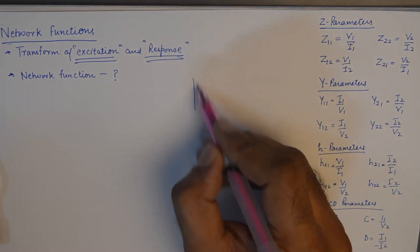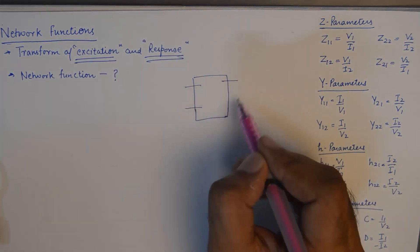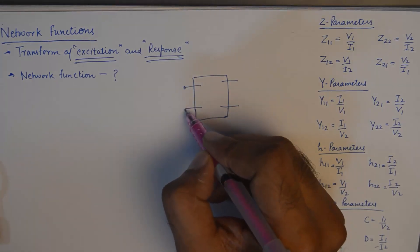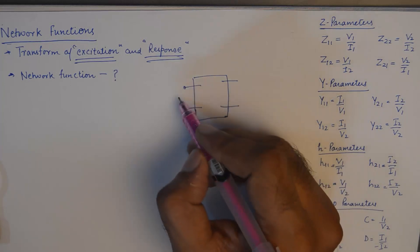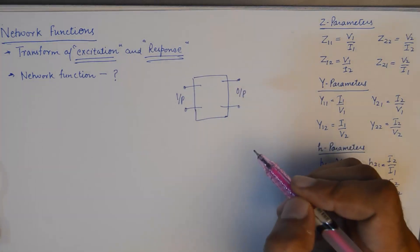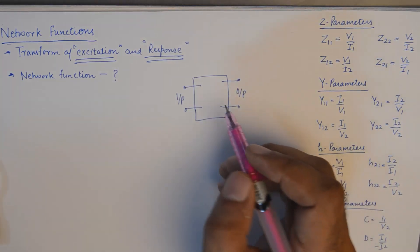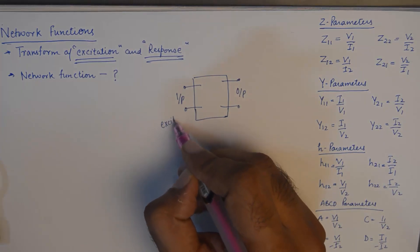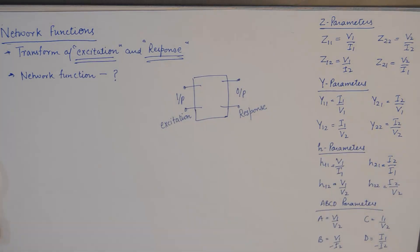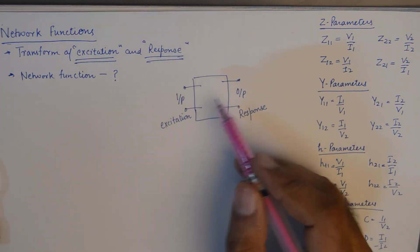A two-port network is essentially depicted by a rectangular box with one port on the left hand side and one port on the right hand side. The port on the left is usually indicative of the input, and on the right we have output. In network analysis, input is also referred to as the excitation and output is also referred to as response.